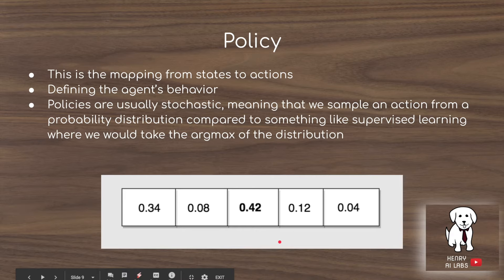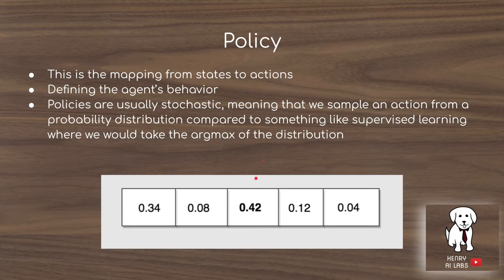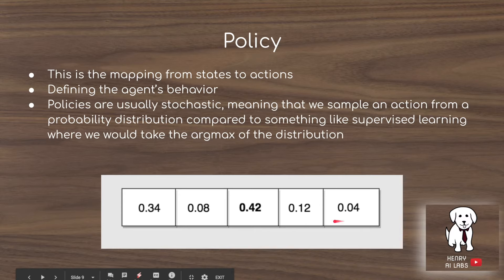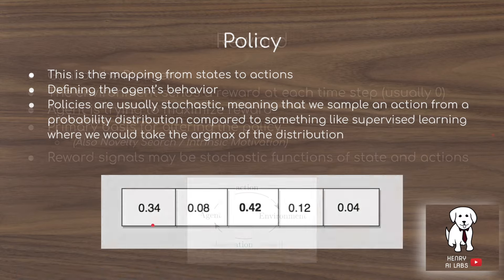Imagine this is our output distribution over different actions. In supervised learning, like an image classifier, we might have classes like cat, truck, dog, deer, and horse — and we would take the maximum estimate as our prediction for that class. But in policies, we treat each output as a probability of sampling that action, and then we randomly sample one of these actions with probability according to the output in the last layer of the neural network.